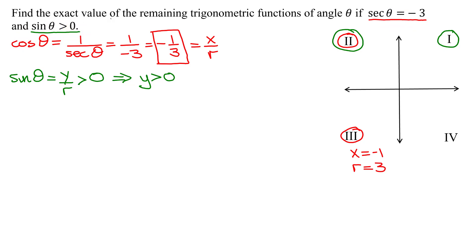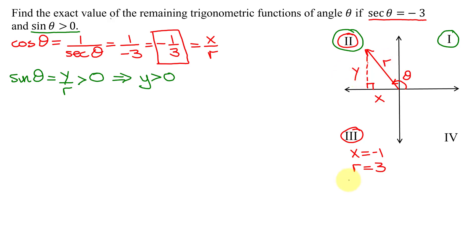I'm going to draw my angle in quadrant 2. There's the terminal side in quadrant 2 and the angle theta. Drawing in a right triangle down to the x-axis: this side is x, this side is y, and the hypotenuse is r. I need to find y using the Pythagorean theorem.